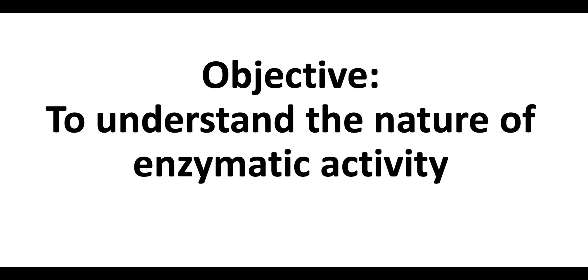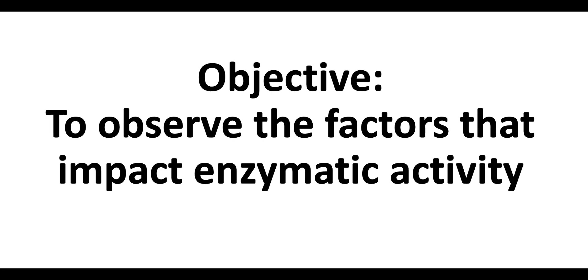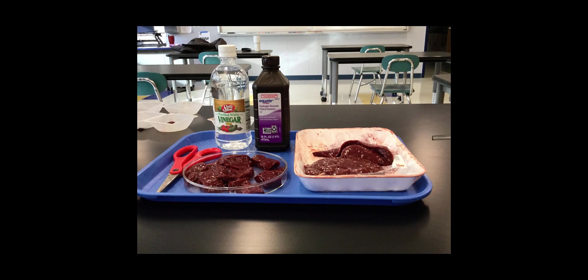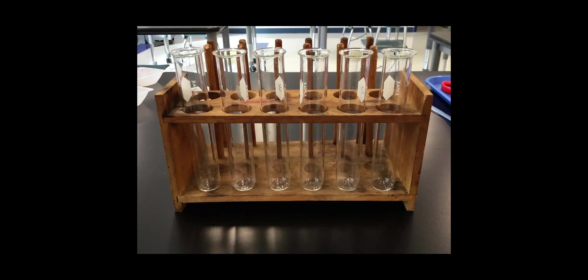This lab has two objectives: the first is to understand the nature of enzymatic activity, and the second is to observe the factors that impact enzymatic activity. The materials we will use are: fresh liver, a stirring rod, forceps, scissors, a hydrogen peroxide solution, a baking soda solution, vinegar, a warm water bath, a hot plate, pipettes or droppers, a test tube holder, and six test tubes.